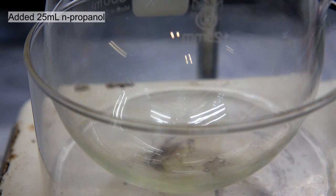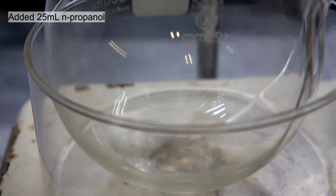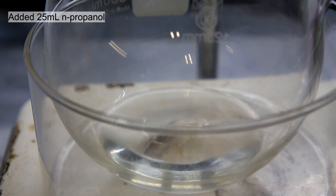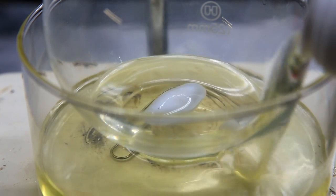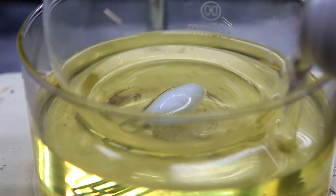Then to a 500 milliliter three neck round bottom flask was added 25 milliliters of n-propanol. Then the oil bath was prepared by adding oil to a crystallizing dish.